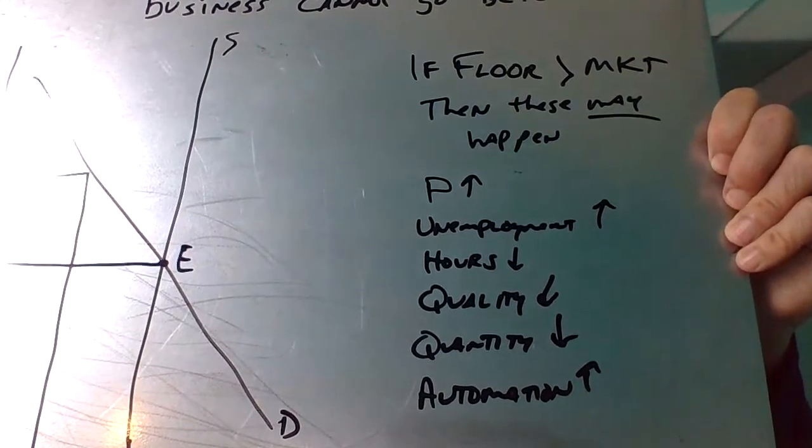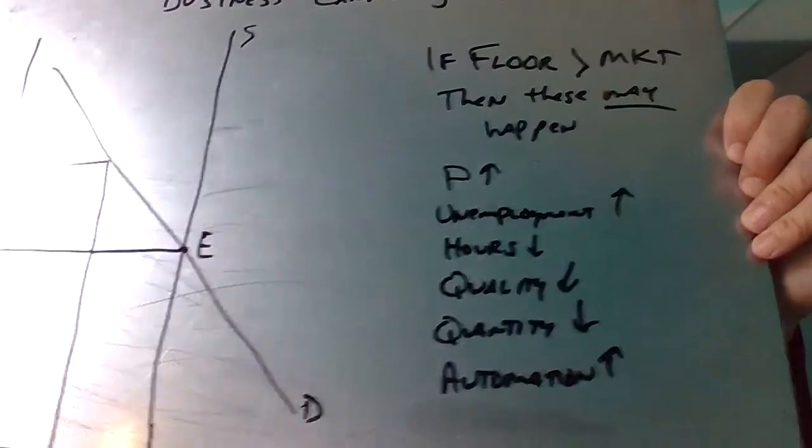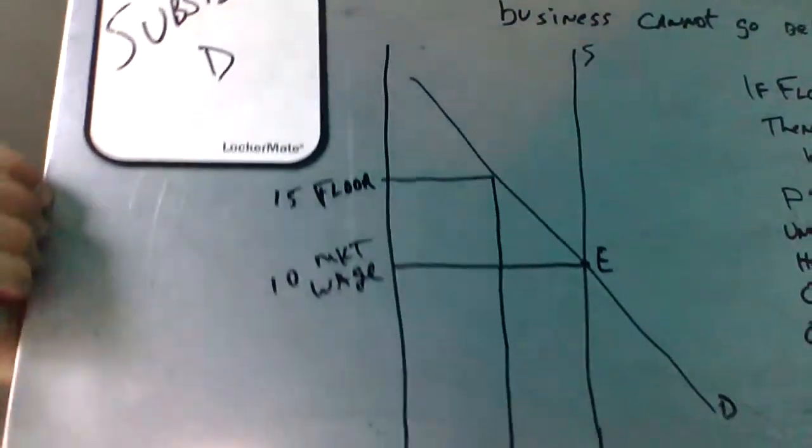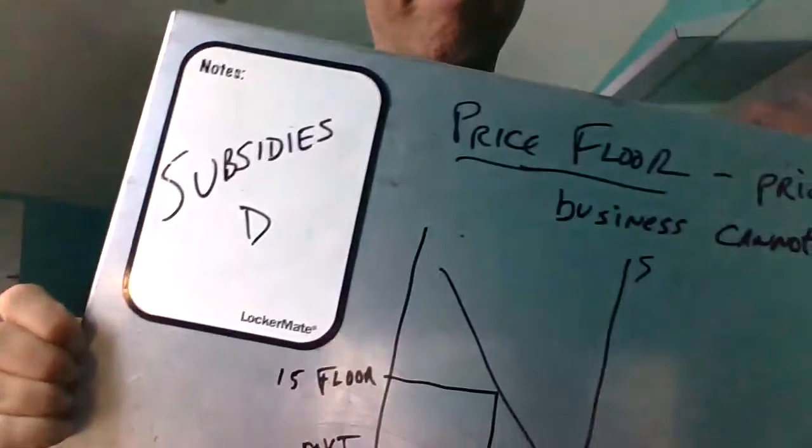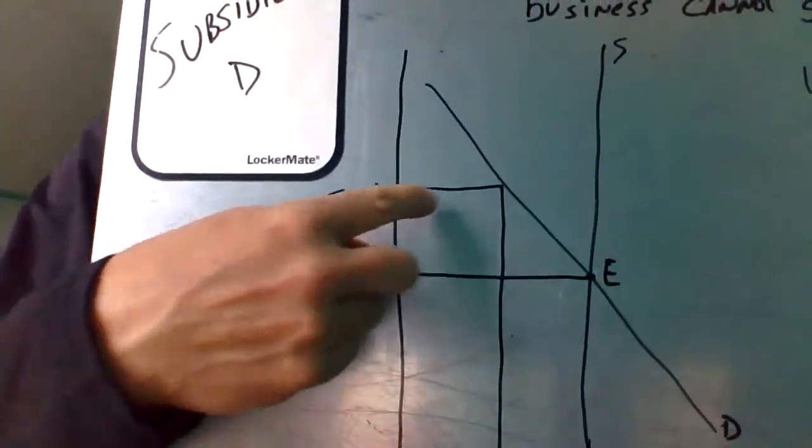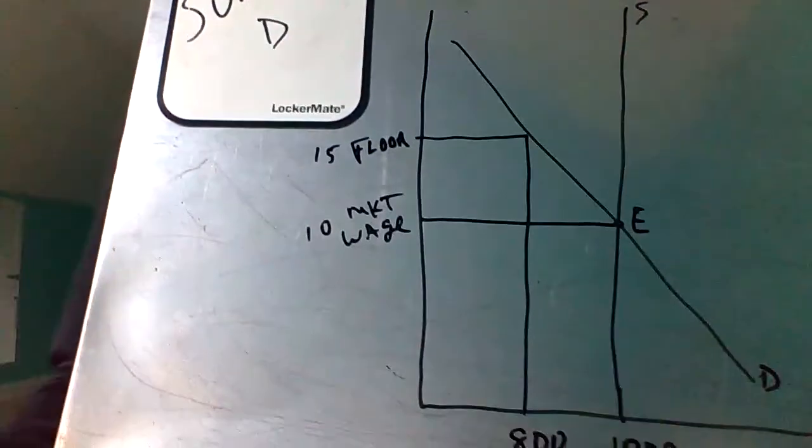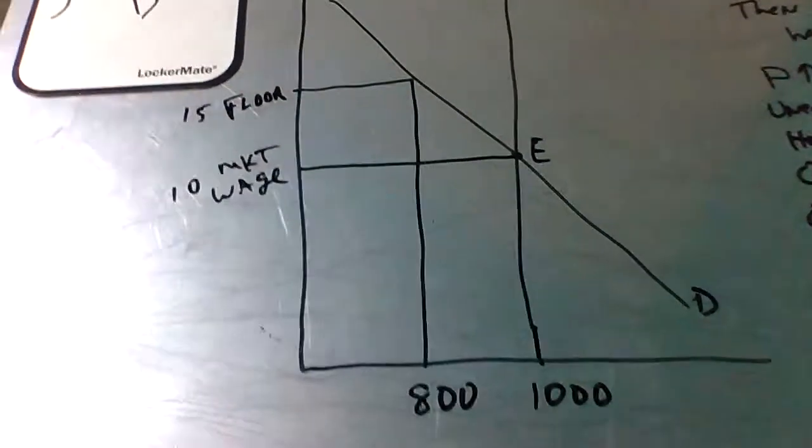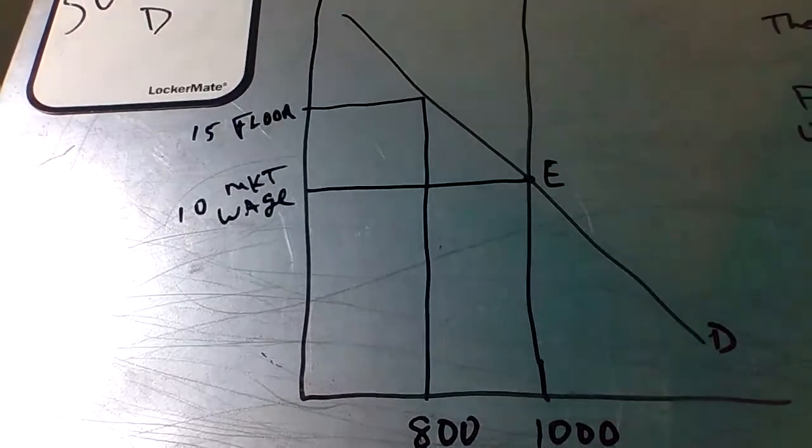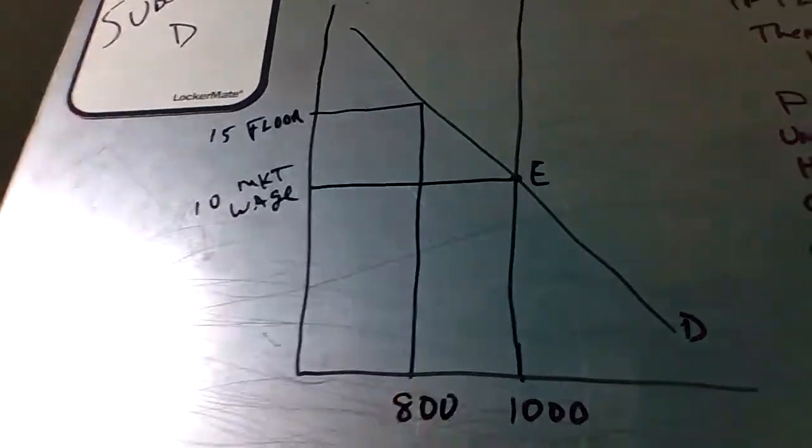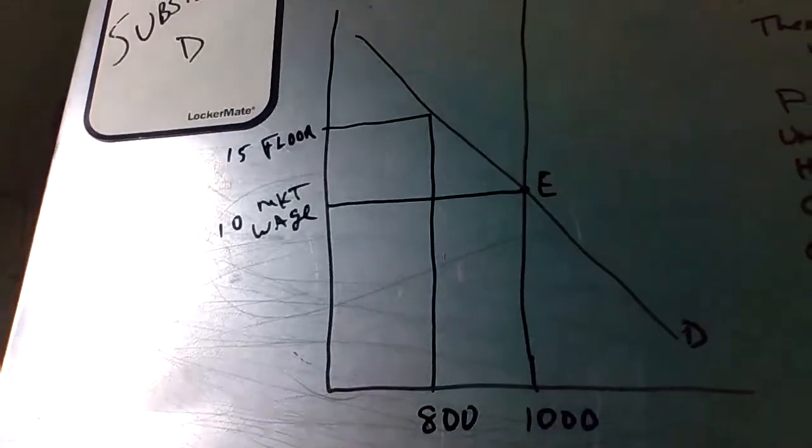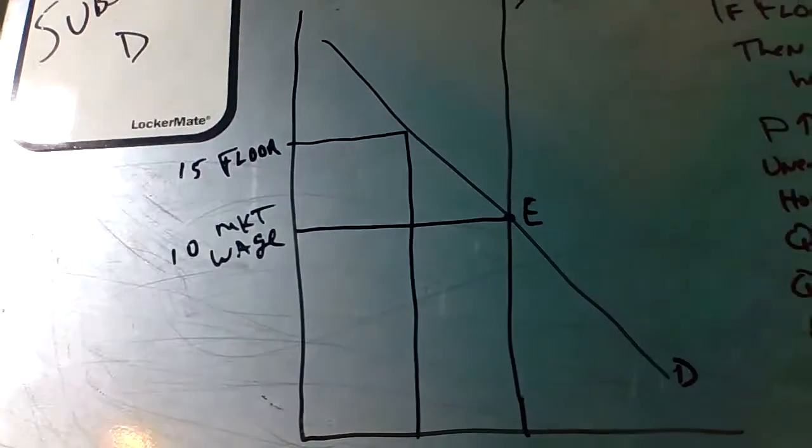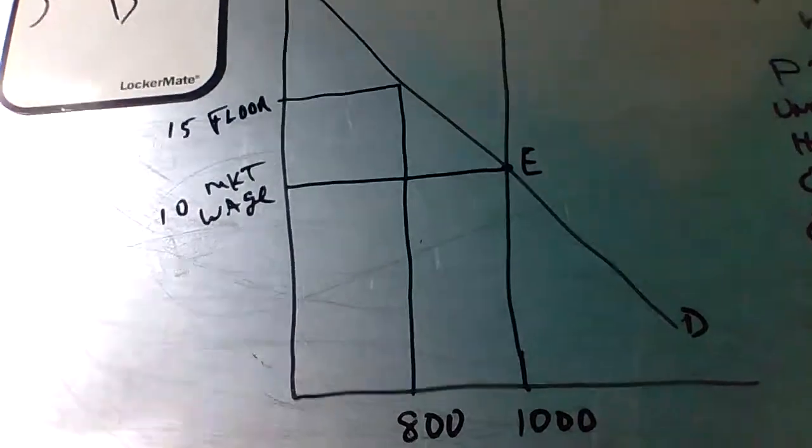So, if your floor is above your market, that's what you tend to see. Now, to go back to the graph to finish this up. If you see where I'm going across, connecting to the D, if you've got a thousand people that'll get hired at 10, you've only got 800 at 15. So, that gap is unemployment. You've got 200 kids that will now not have jobs. And who are those going to be?